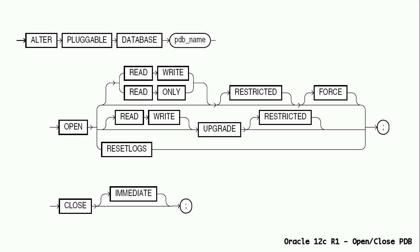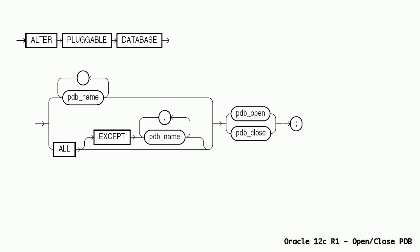We can close a pluggable database, optionally with the immediate keyword. This is similar to the database shutdown normal or shutdown immediate commands. We also have an option to open or close all or specific pluggable databases with one command, and an option to specify an except list to avoid changing the state of specific pluggable databases.